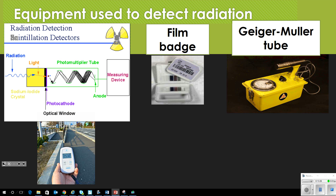Equipment used to detect radiation includes radiation detectors and scintillation detectors. Those just give you a number — they go through a photomultiplier tube and measure how much radiation is being given off. Film badges are used in hospitals — just a film that gets exposed as you come in contact with radiation. And of course we have the old-fashioned Geiger-Müller tube — the Geiger counter — which you probably saw used in Ghostbusters.